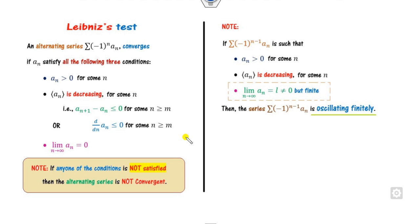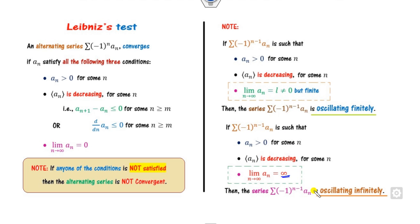Now, if instead of the limit being 0 it is some finite non-zero number, then we say the series is oscillating finitely — it is not convergent but oscillating finitely. On the other hand, if this limit is infinite, then we say the series is oscillating infinitely.